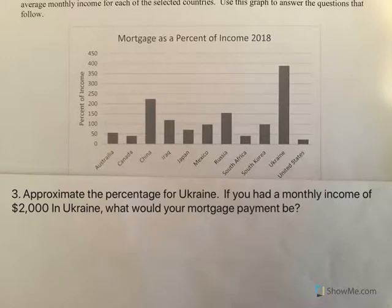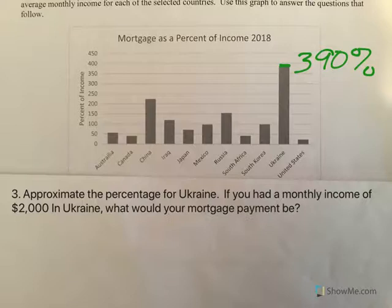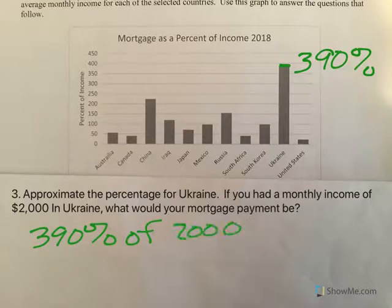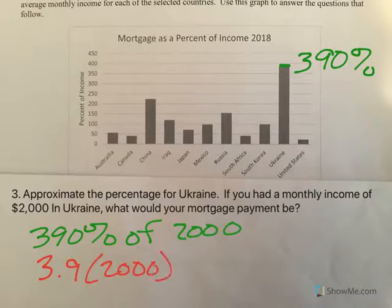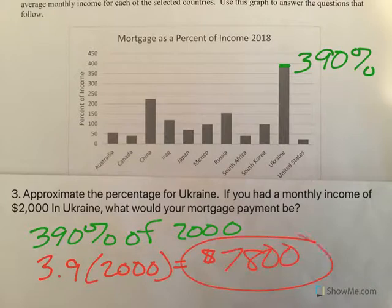Looking at Ukraine, it's way up there — let's call it 390%. If you had a monthly income of $2,000 in Ukraine, your mortgage payment would be 390% of $2,000. Converting 390% to a decimal gives 3.9, and 3.9 times $2,000 is $7,800. Think about that — you bring home $2,000 a month and your mortgage payment is $7,800.